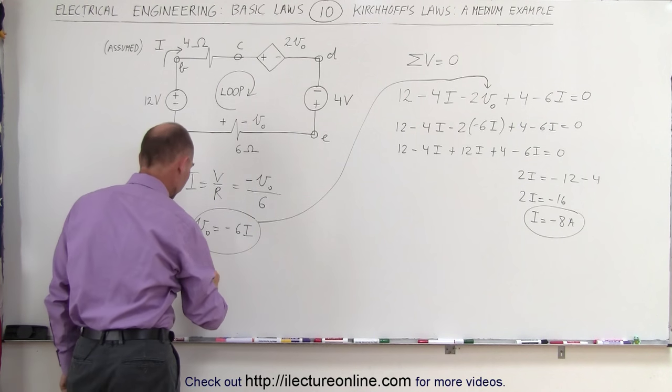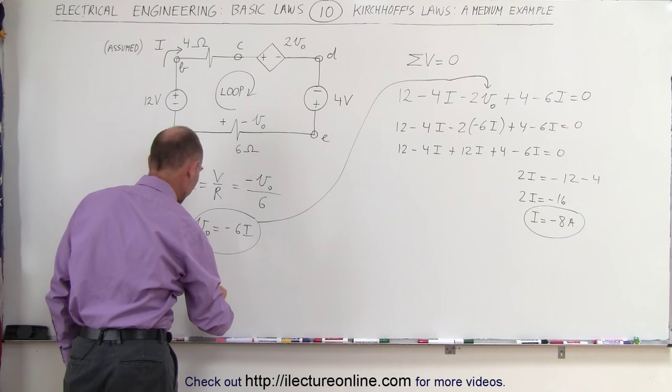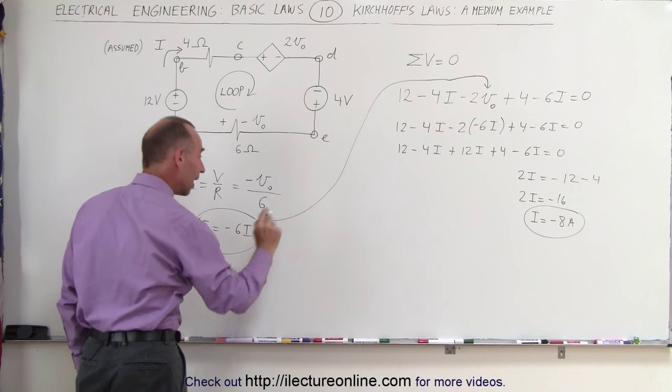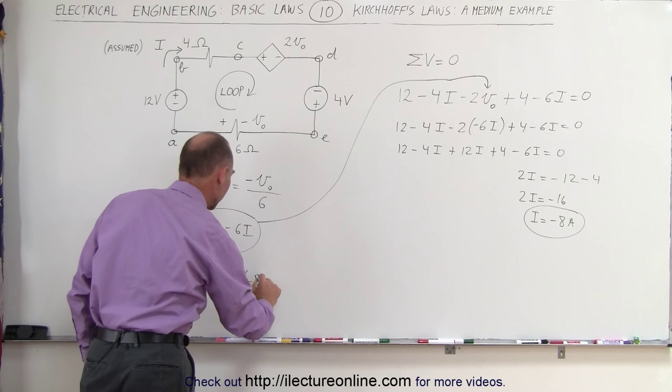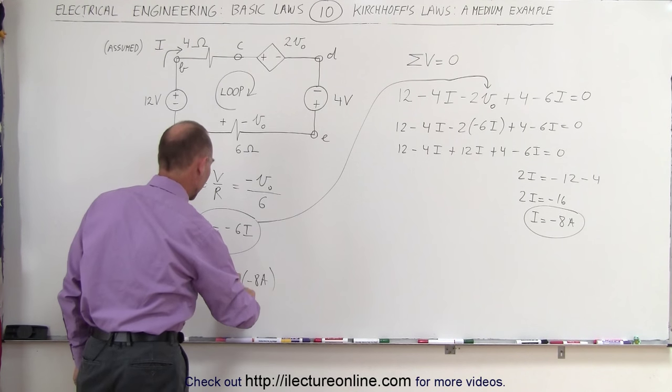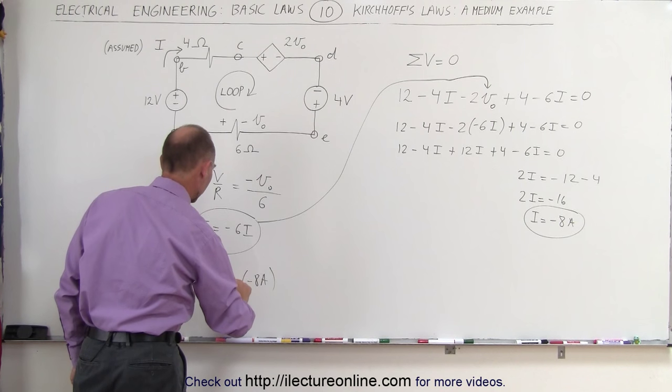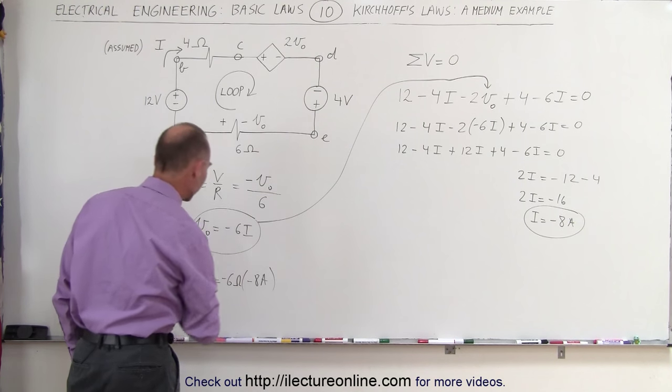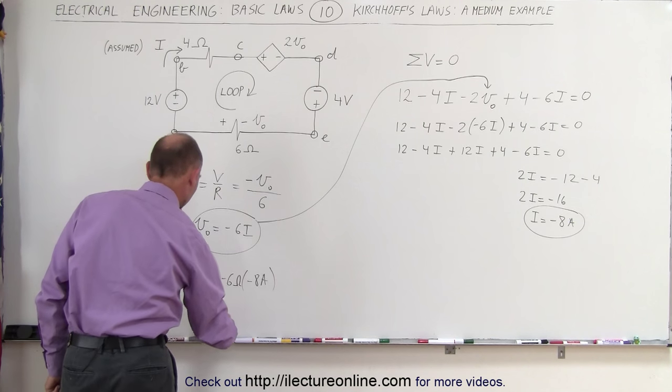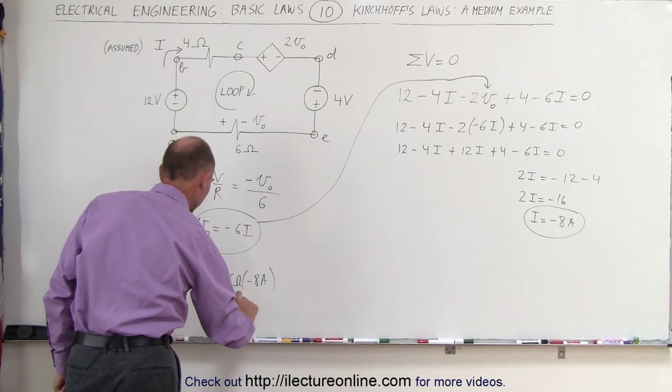Now we can solve for the voltage across the voltage source. V sub nought is equal to minus 6 times I, and I is a minus 8 amps. Of course, this is a minus 6 ohms, let's just put minus 6 ohms in here, and ohms times amps is your voltage. So therefore, V sub nought is equal to 48 volts.